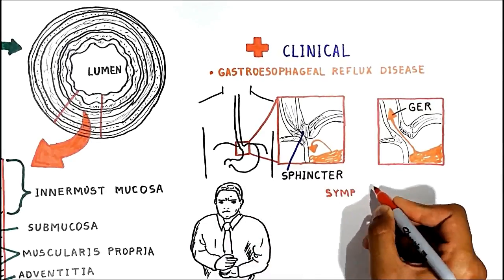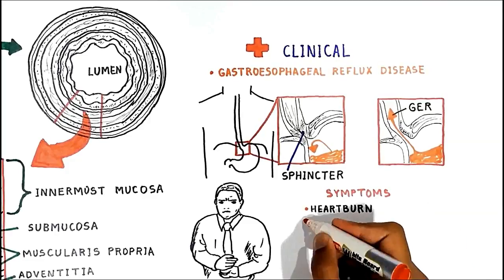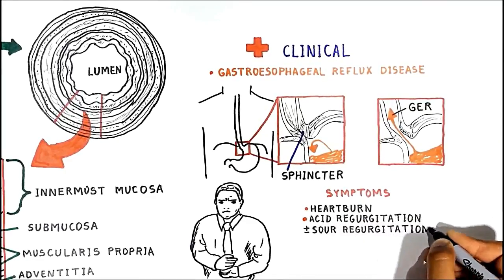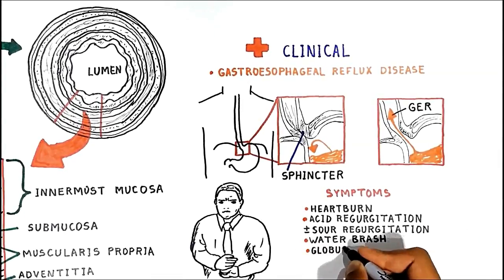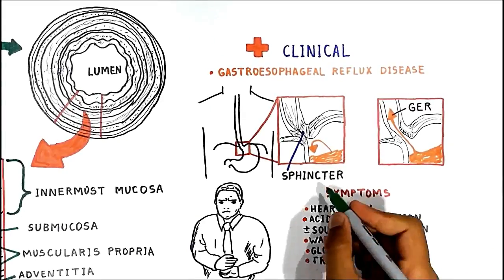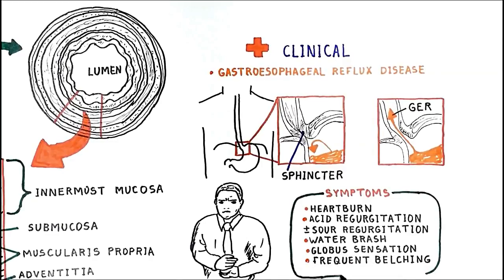The most common symptoms of gastroesophageal reflux in adults are heartburn, acid regurgitation, sour regurgitation, waterbrash, globus sensation (sensation of a lump in the throat), and frequent belching. The term gastroesophageal reflux disease is applied to patients with symptoms suggestive of reflux or complications thereof, but not necessarily with esophageal inflammation.